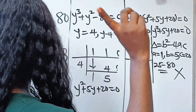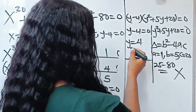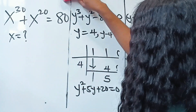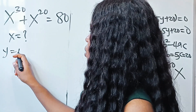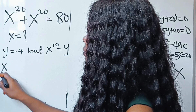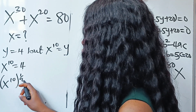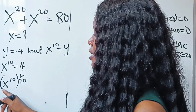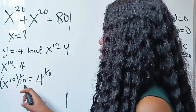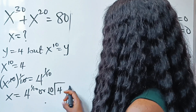Recall that we set x to the power of 10 equal to y. Since y equals 4, we have x to the power of 10 equals 4. Raising both sides to the power of 1 over 10 cancels the exponent on x, giving x equals 4 to the power of 1 over 10, or the 10th root of 4.